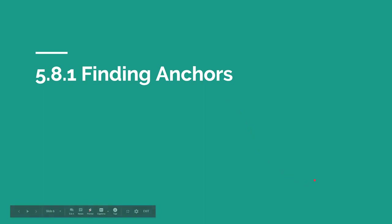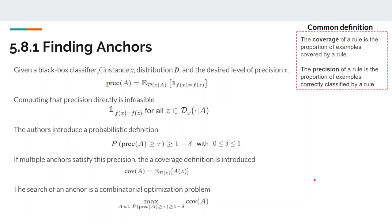Now let's describe in detail the method of finding anchors. First, let us think for a moment about the common definition of precision and coverage of a rule. The coverage of a rule is the proportion of examples covered by a rule. And the precision of a rule is the proportion of examples correctly classified by a rule. So now let's see the problem definition of finding anchors.